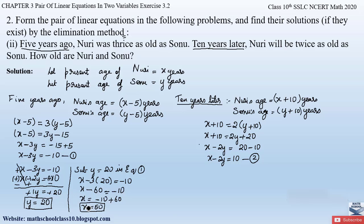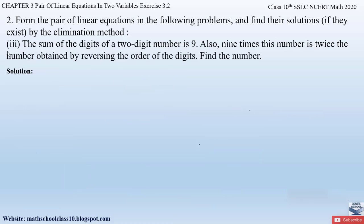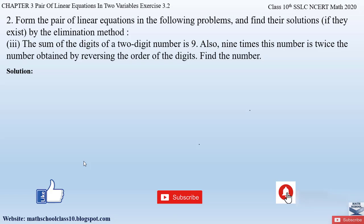We had assumed X as the present age of Noori and Y as the present age of Sonu. Therefore, Noori is 50 years old and Sonu is 20 years old. In my next video, I will solve part 3 from question number 2, exercise 3.2, chapter 3, pair of linear equations in two variables. Do like, subscribe, and hit the bell button for the latest updates as I complete the whole syllabus for class 10.